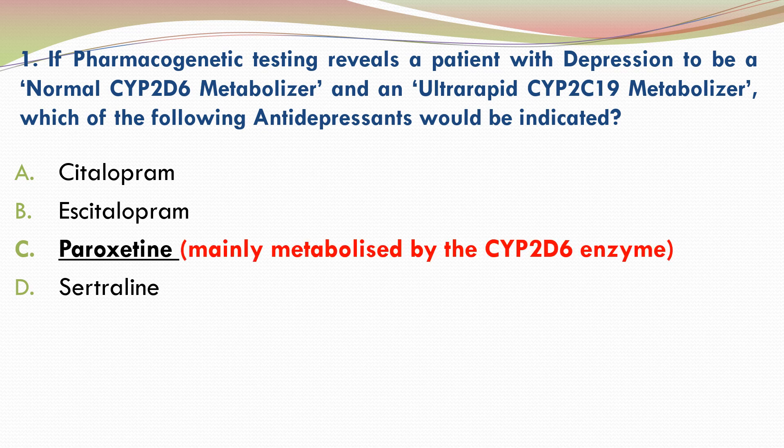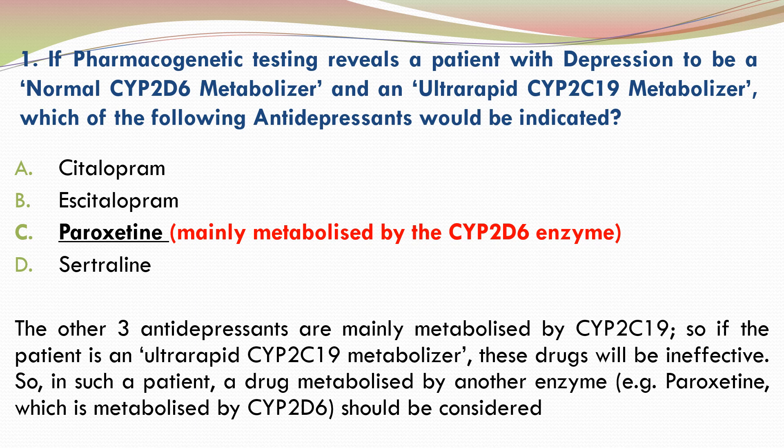C is the correct answer because paroxetine is an antidepressant that is mainly metabolized by the CYP2D6 enzyme. The other three antidepressants are mainly metabolized by CYP2C19. So if the patient is an ultra-rapid CYP2C19 metabolizer, these drugs will be ineffective. In such a patient, a drug metabolized by another enzyme — for example, paroxetine, which is mainly metabolized by CYP2D6 — should be considered.